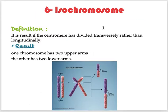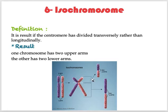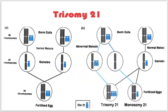There is also isochromosome formation — normally chromosomes divide longitudinally, but in isochromosome formation, transverse division occurs, resulting in abnormal chromosome arms.